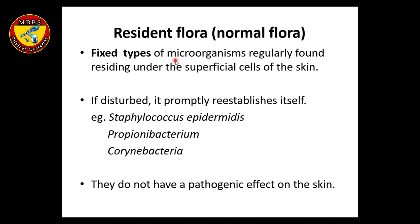Resident flora, or normal flora, are fixed types of microorganisms regularly found and residing under the superficial cells of the skin. If disturbed, they promptly re-establish themselves. Examples include Staphylococcus epidermidis, Propionibacterium, and Corynebacterium. They do not have any pathogenic effect on the skin.